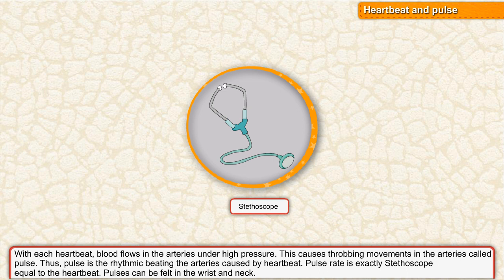This causes throbbing movements in the arteries called pulse. Thus, pulse is the rhythmic beating of the arteries caused by the heartbeat. Pulse rate is exactly equal to the heartbeat. Pulses can be felt in the wrist and neck.